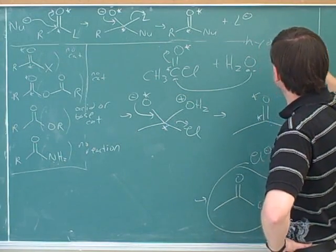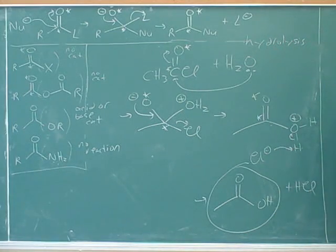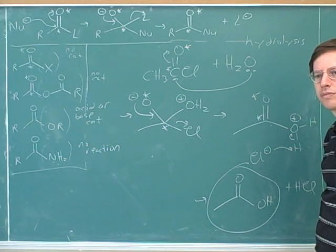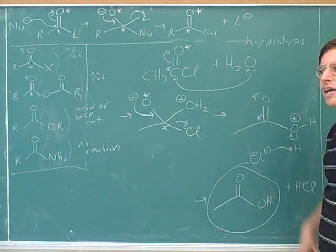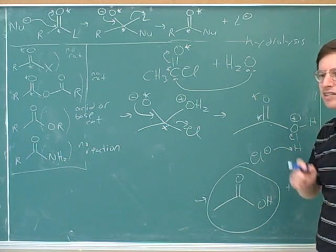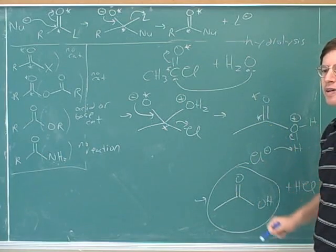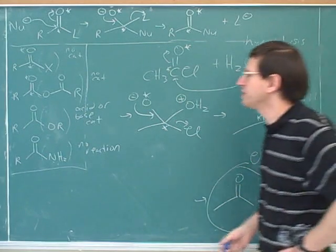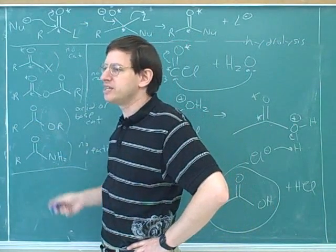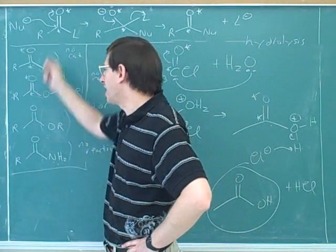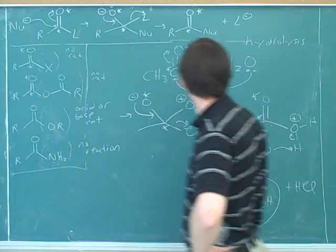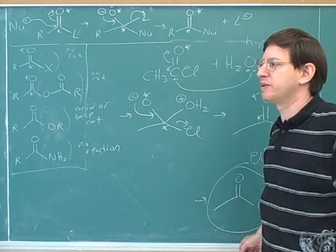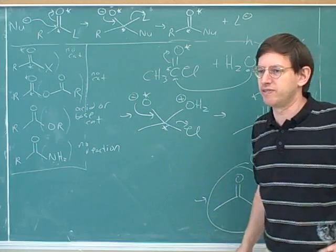You're going to see lots more hydrolysis for the rest of the course. Are we always going to get a carboxylic acid when we have a hydrolysis? If you hydrolyze a carboxylic acid derivative, you will always get a carboxylic acid, because that's the definition of a carboxylic acid derivative. The reason that these are all put in the same group is because they all hydrolyze to carboxylic acids. There are other things you can hydrolyze that would not become carboxylic acids, but those are not considered carboxylic acid derivatives.